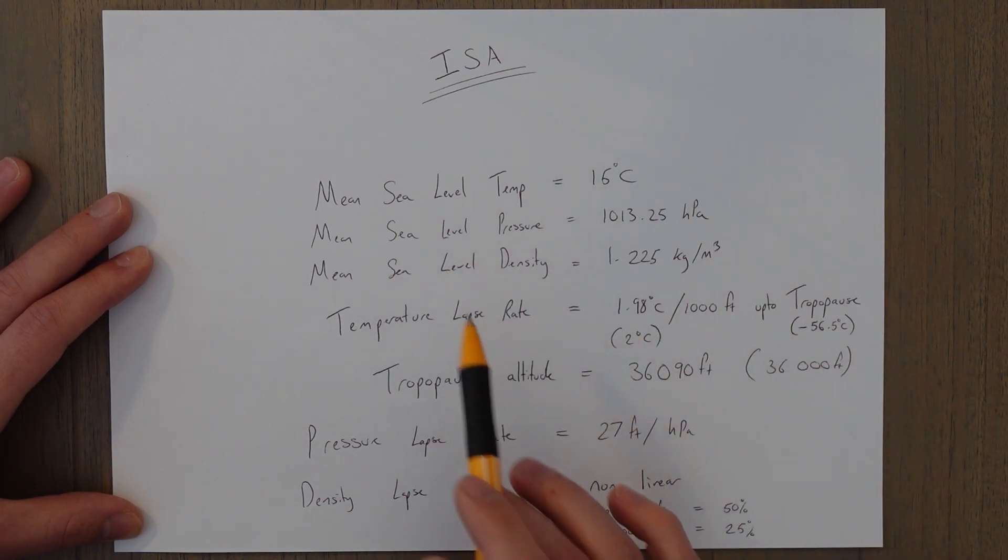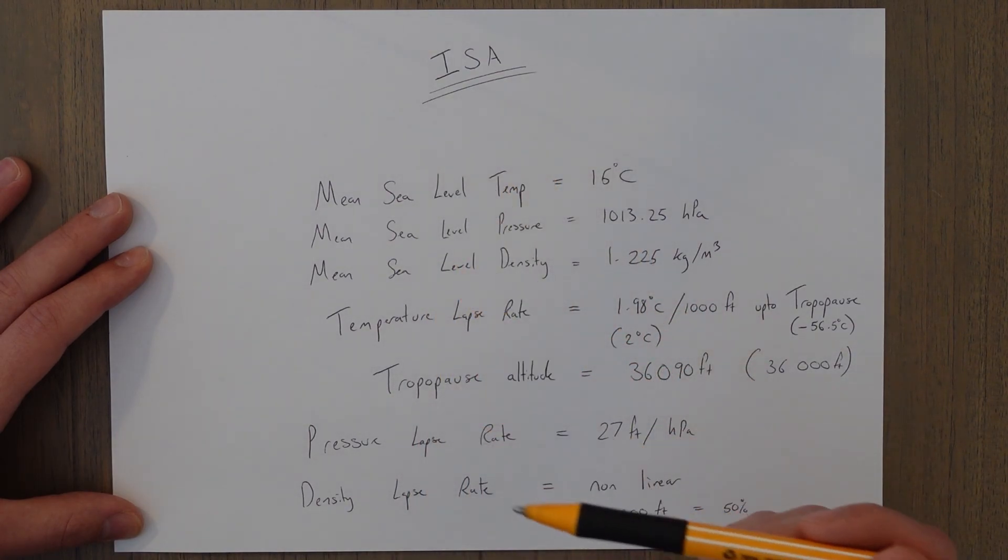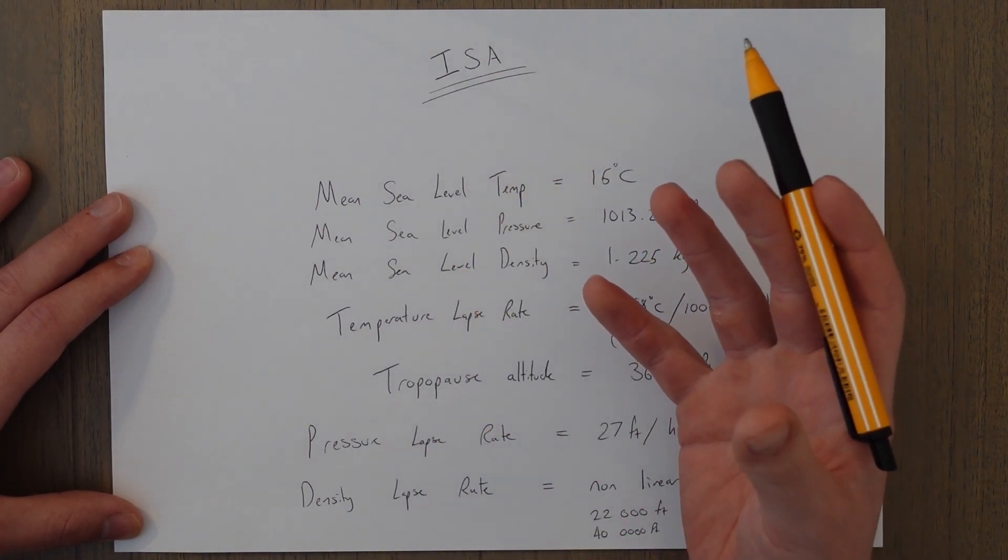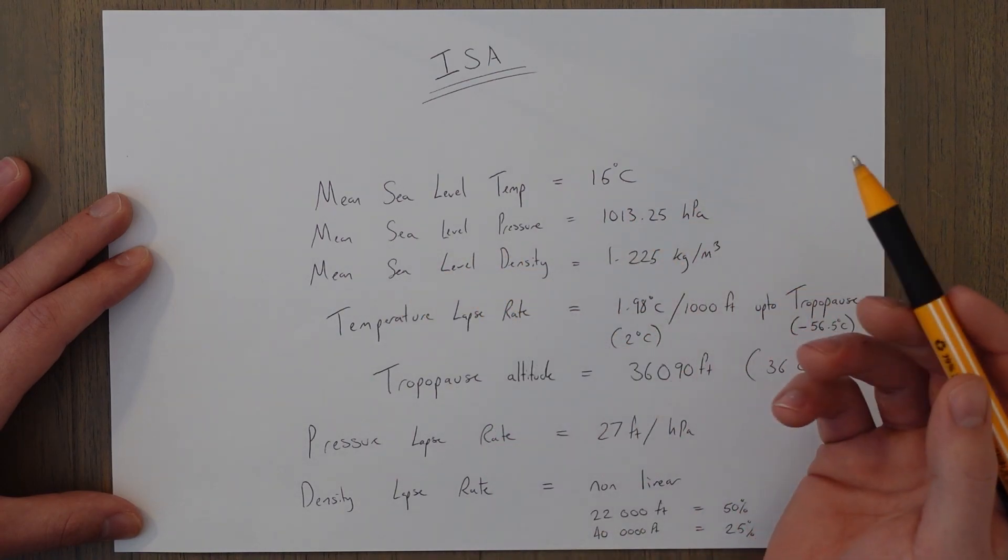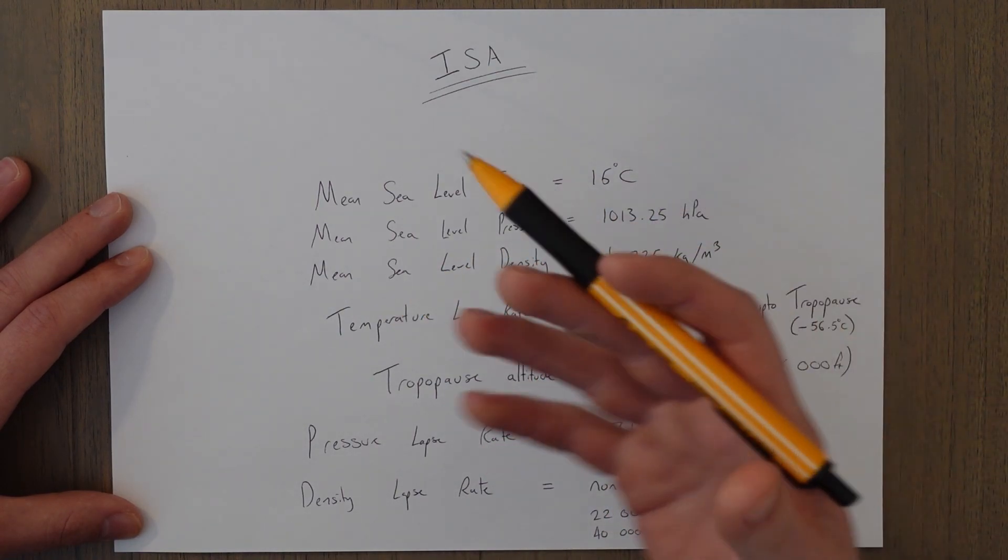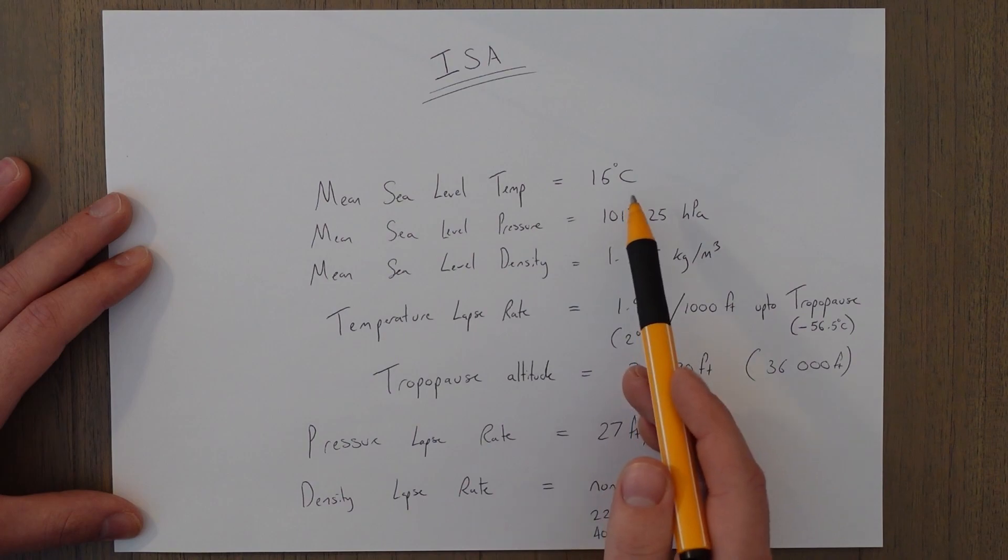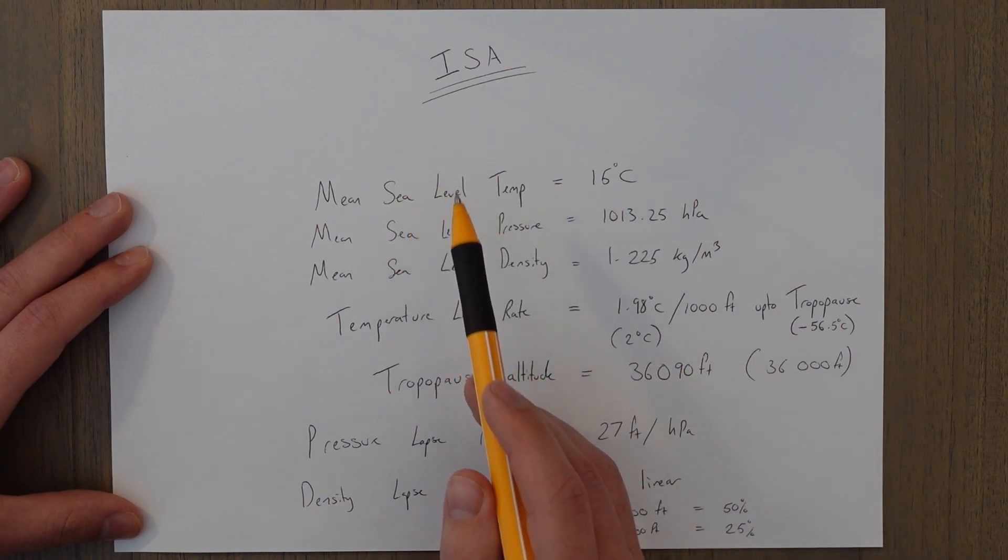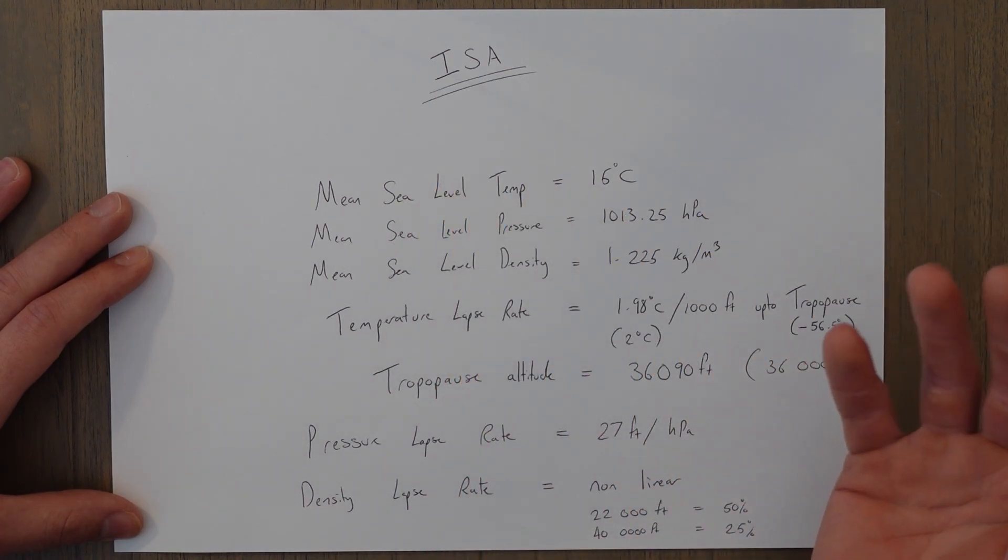If we have deviations from the ISA atmosphere, it's usually defined as a temperature deviation. So you would say an ISA deviation of plus or minus degrees. If at sea level it was 12 degrees, that would be an ISA minus 3 kind of day.